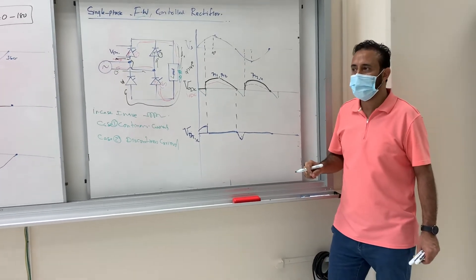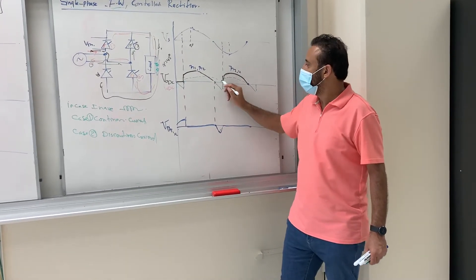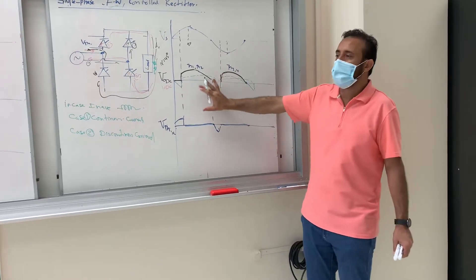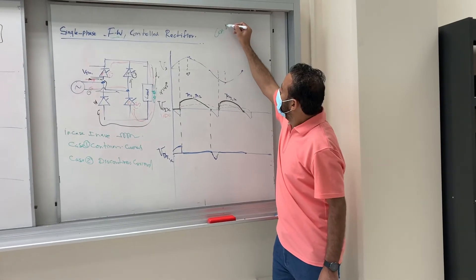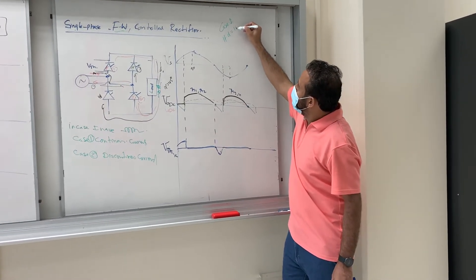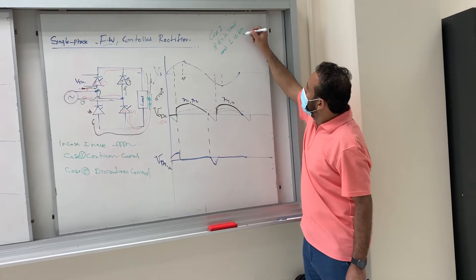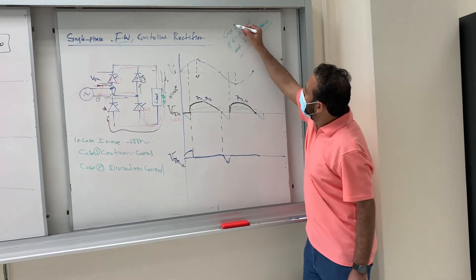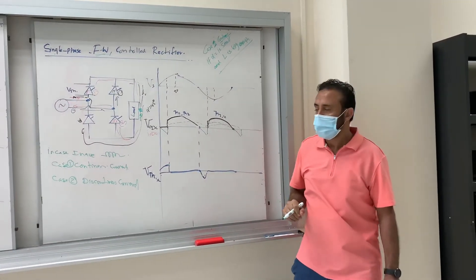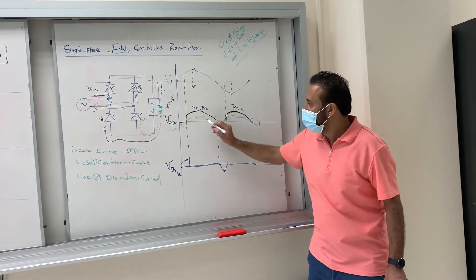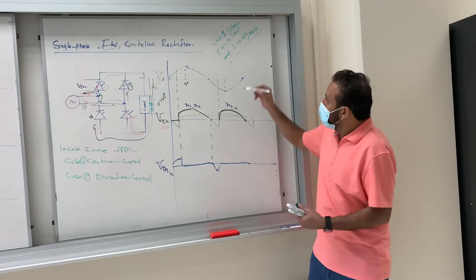In the continuous current case, the current follows the voltage continuously. Case one — continuous current — occurs when alpha is small and the inductance is large enough, so the current can reach the next firing pulse and remains continuous.